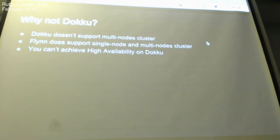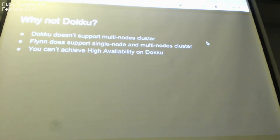So why not Dokku? There's another open source project called Dokku for deployments. The reason I choose Flim over Dokku is because Dokku does not support multi-nodes, and Flim supports multi-nodes. With Dokku you cannot use multiple servers to run the same app instance — you can't join the cluster. With Flim, you can have multiple servers forming a cluster, achieving high reliability.